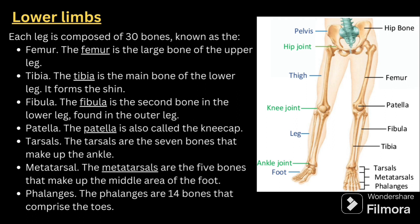Next comes the lower limb. Each leg is composed of 30 bones. First is the femur — the large bone of the upper leg. Second is the tibia — the main bone of the lower leg that forms the shin. Third is the fibula — the second bone of the lower leg on the outer side. Fourth is the patella — also called the kneecap. Fifth is the tarsals — seven bones that make up the ankle. Sixth is the metatarsals — five bones that make up the middle area of the foot. Seventh are the phalanges — 14 bones that comprise the toes.